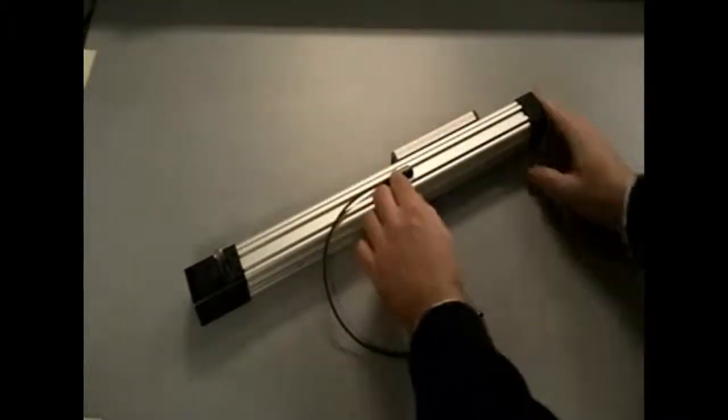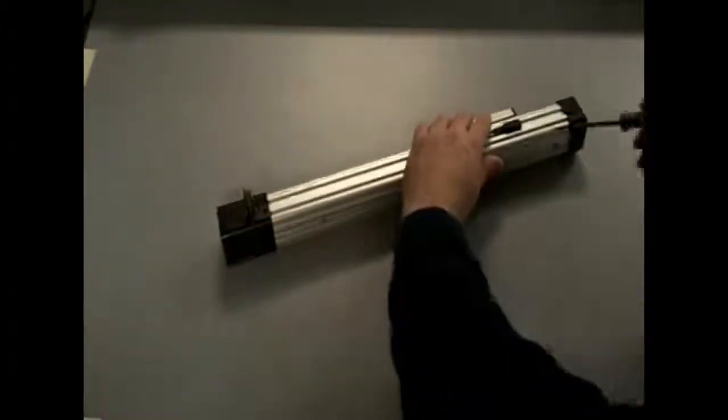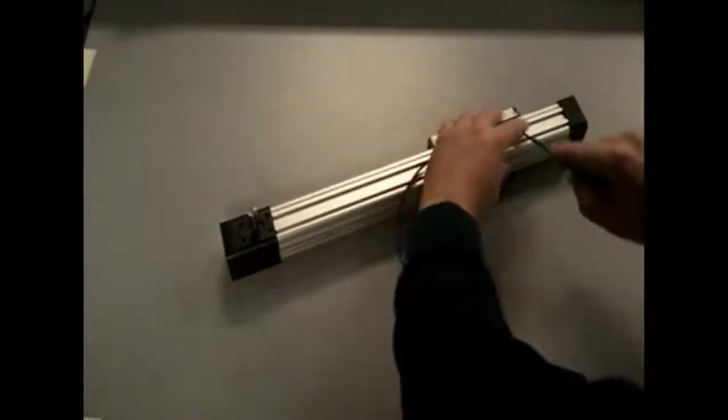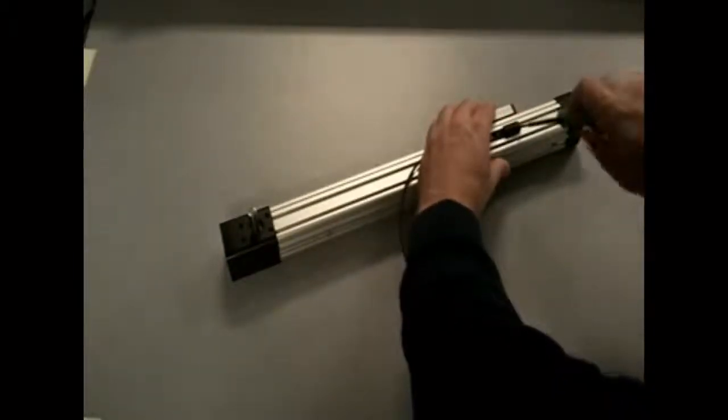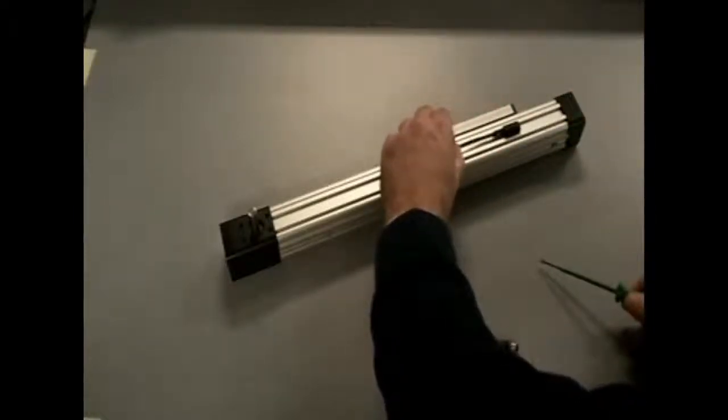Position the sensor into its desired location over the length of the actuator. Using a small flathead screwdriver, apply 1.8 inch-pounds torque to the screw within the sensor. This will secure the sensor into its desired location.